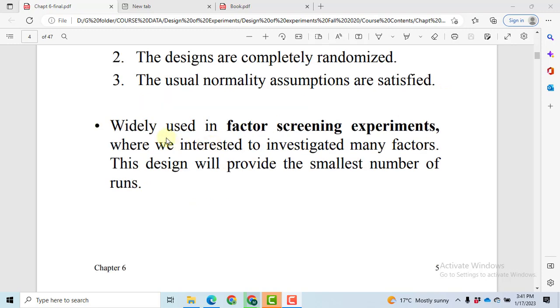These 2^k factorial designs are widely used in factor screening experiments. Factor screening experiments are those which are performed before the major experimentation. These experiments only tell us whether changing the level of a factor has a significant effect on the response variable or not.